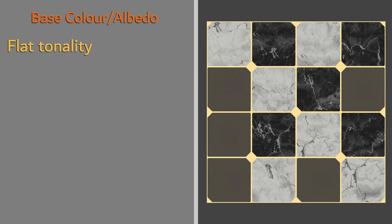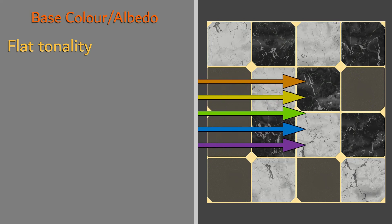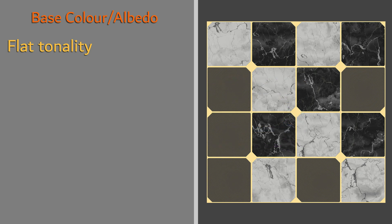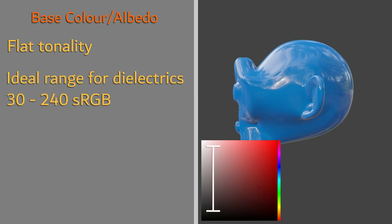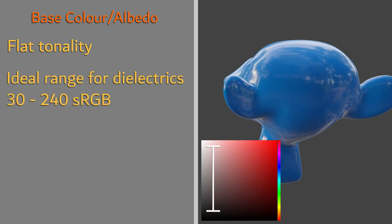When we are creating color for our dielectric materials, we do not want our values to be either too dark or too bright. We have to remember that these values are representing diffused reflection, which usually tends to be lighter in tone than we generally remember. With that in mind, the ideal range for dielectric color values is within roughly 30 to 240 sRGB.